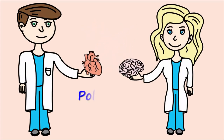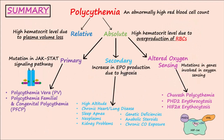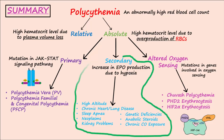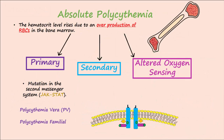Let's continue our discussion of polycythemia. In this video, Part 2, we discuss the other two forms of absolute polycythemia, including secondary and altered oxygen sensing.